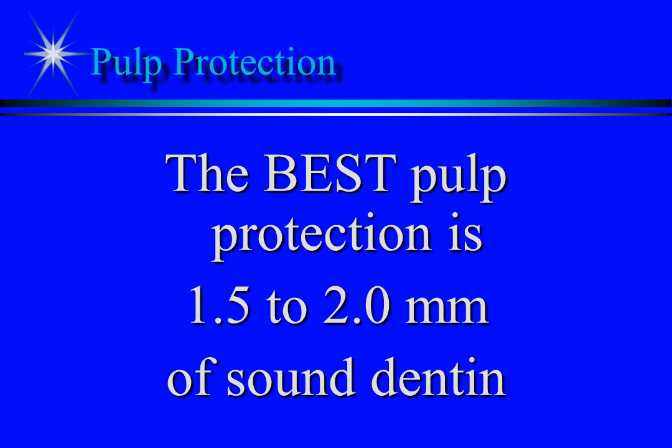1.5 to 2 millimeters of remaining dentin thickness is the best pulp protection. If at least 1.5 millimeters of dentin remains, usually no additional treatment is needed. If less than 1.5 millimeters of dentin remains between the preparation and the pulp, then we usually use a liner or a base applied to the floor and axial wall of the preparation.